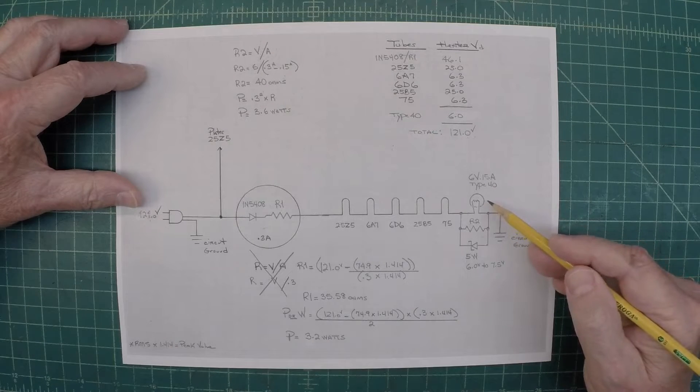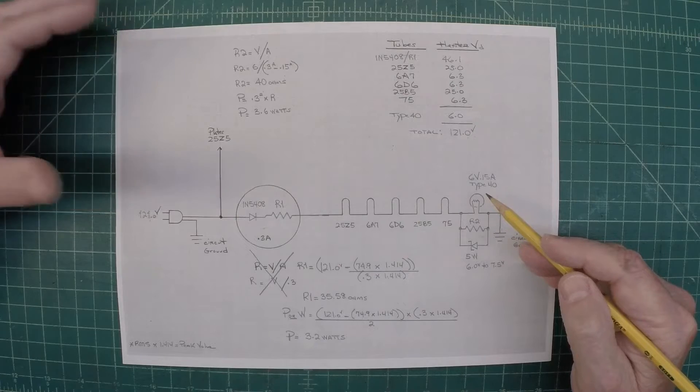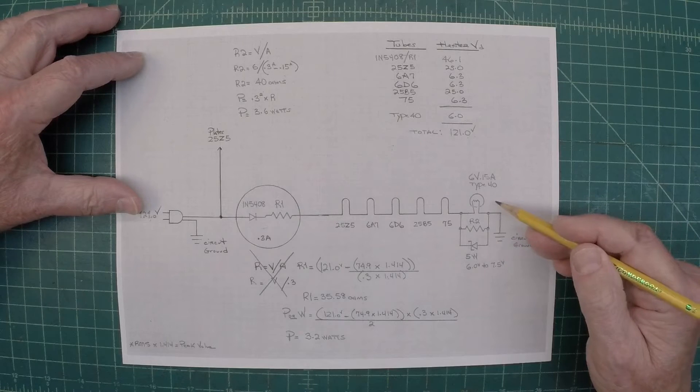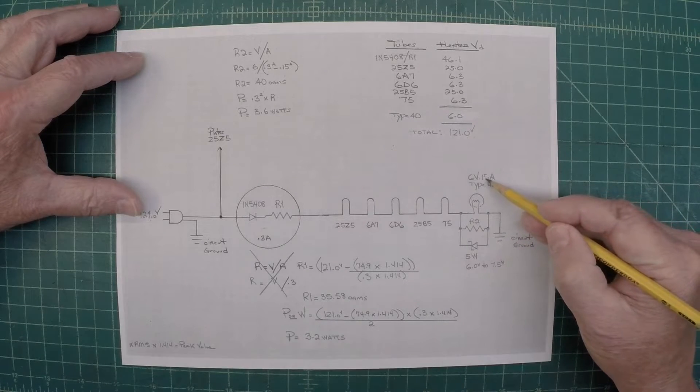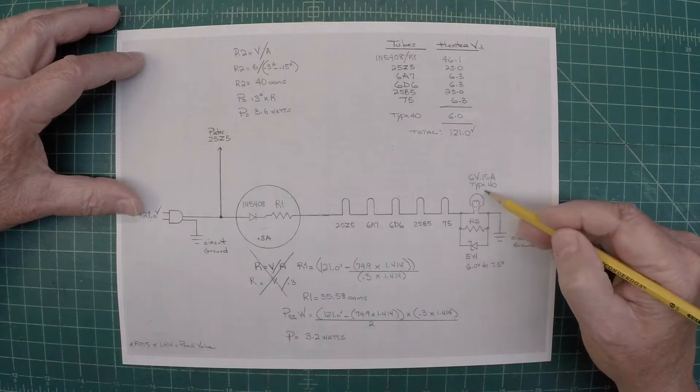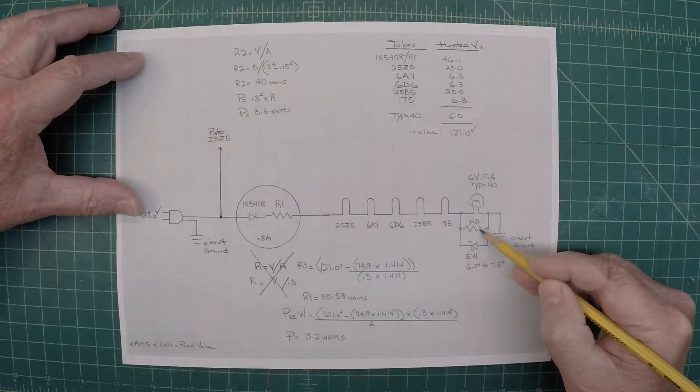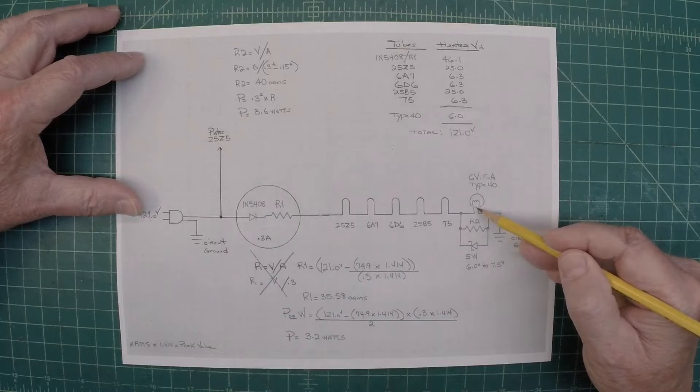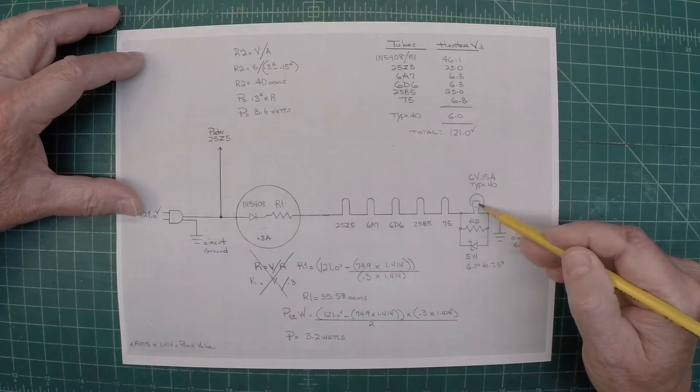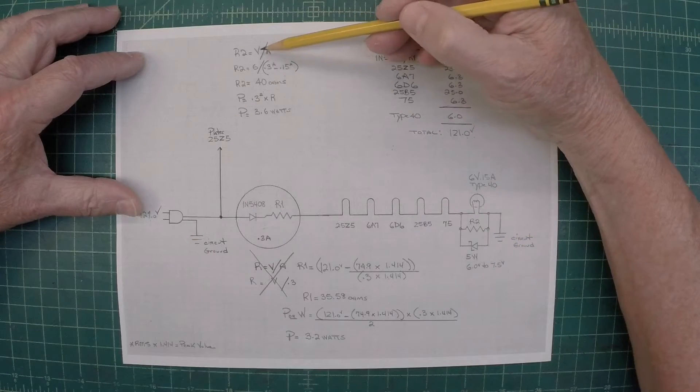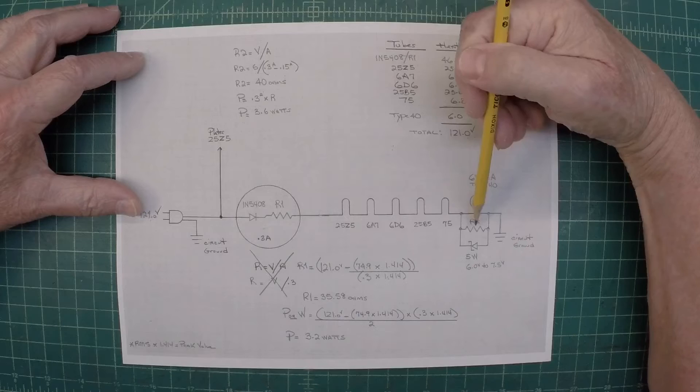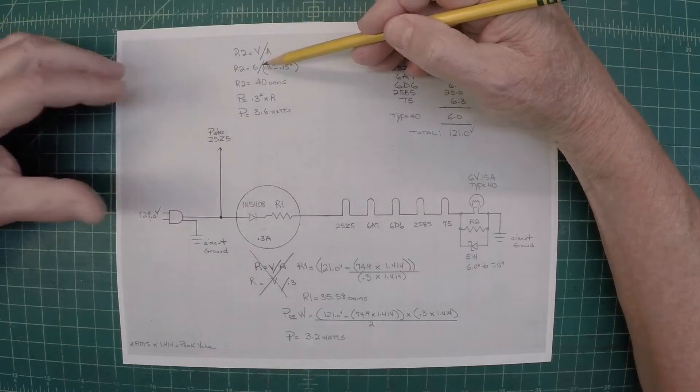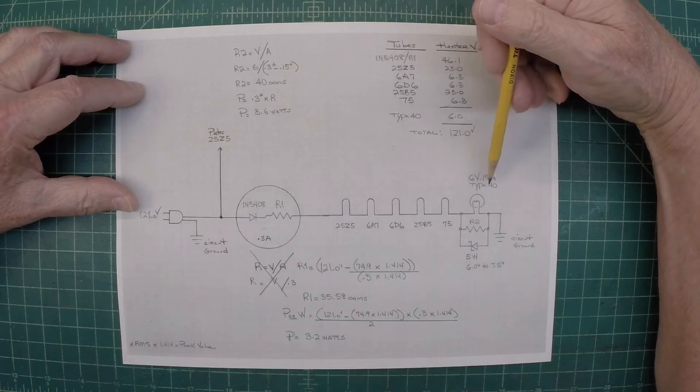And the reason for that is the whole string itself really needs to see 300 milliamps or 0.3 amps of current. And you can't see that at 0.15. So that would be a problem. So the shunt resistor allows us to go back in and create a 300 milliamp load at this point. And to do that, R2, to get the value of R2,